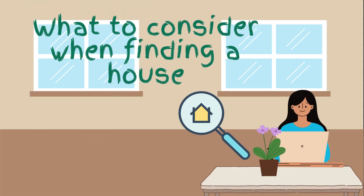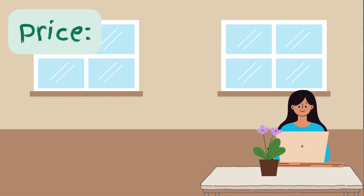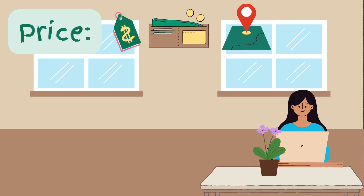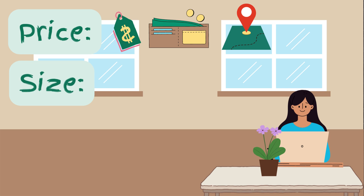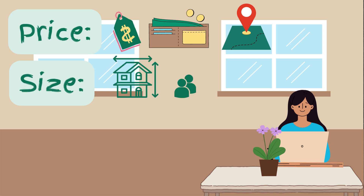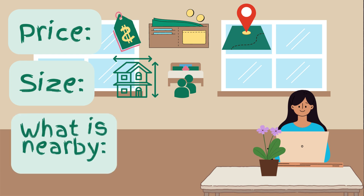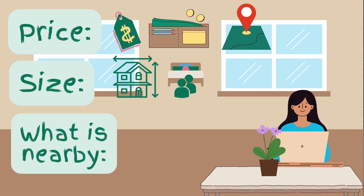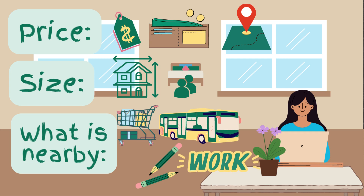What to consider when finding a house? First, price. When choosing a house, the most important thing is to choose the one you can afford. You will see that the price of a house is different in each location. Second, size. You also need to consider what size of house your family needs. In Victoria, it is recommended that no more than two people share a bedroom. Third, what is nearby. Also consider what is important to you: shopping, public transport, school, your workplace or worship place.